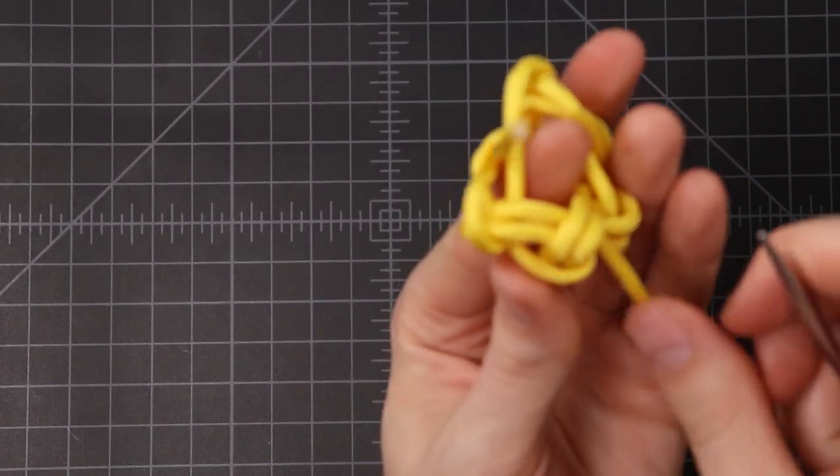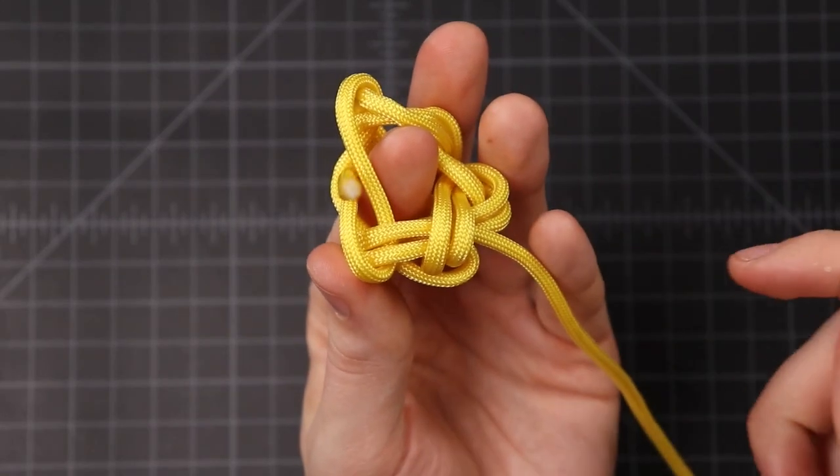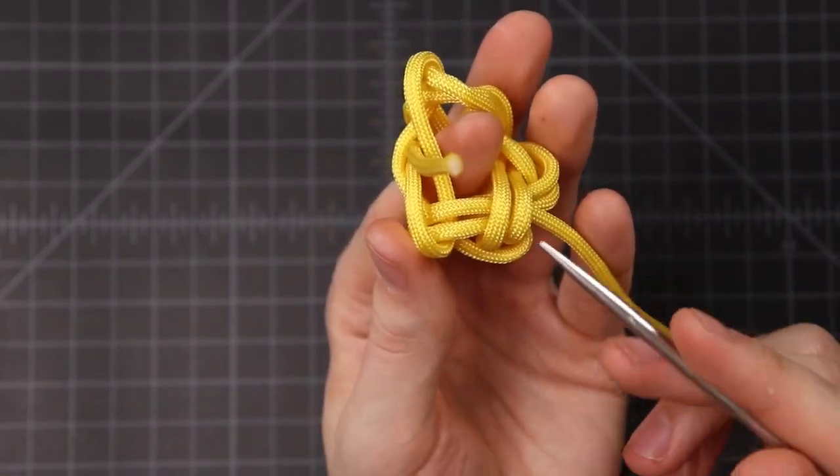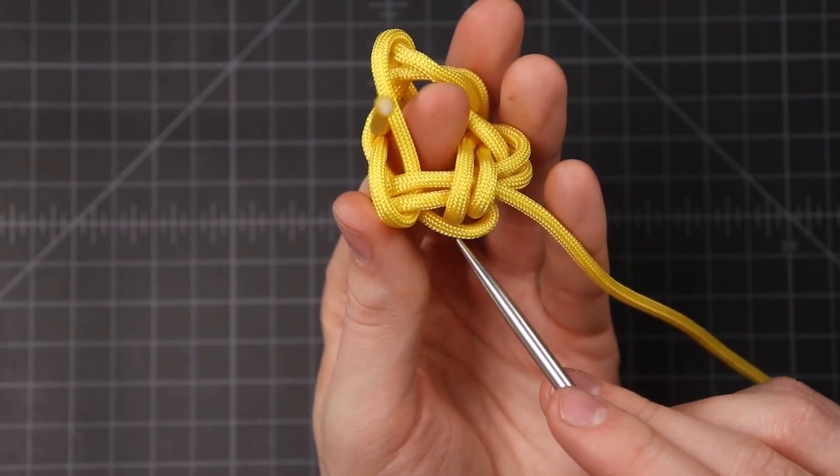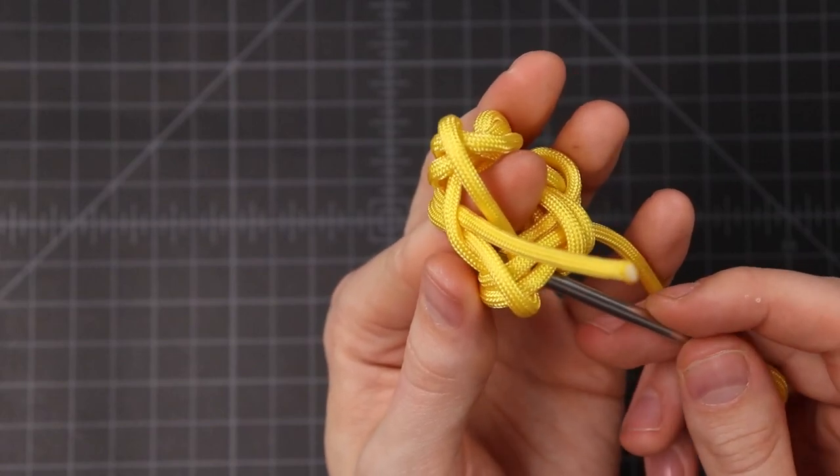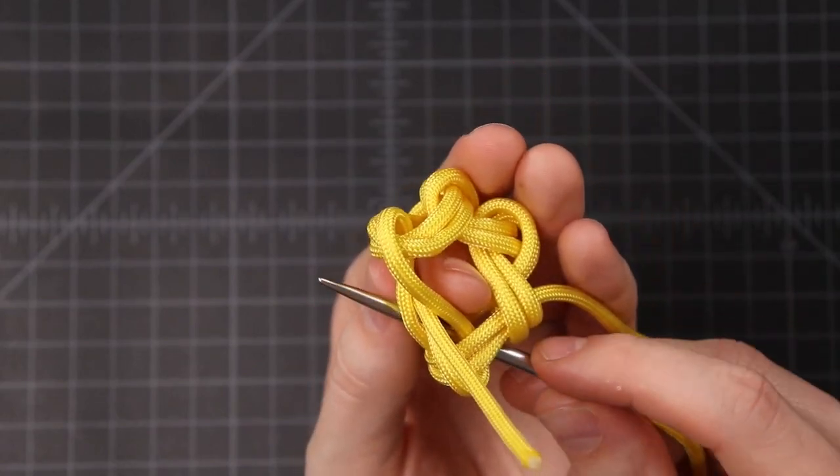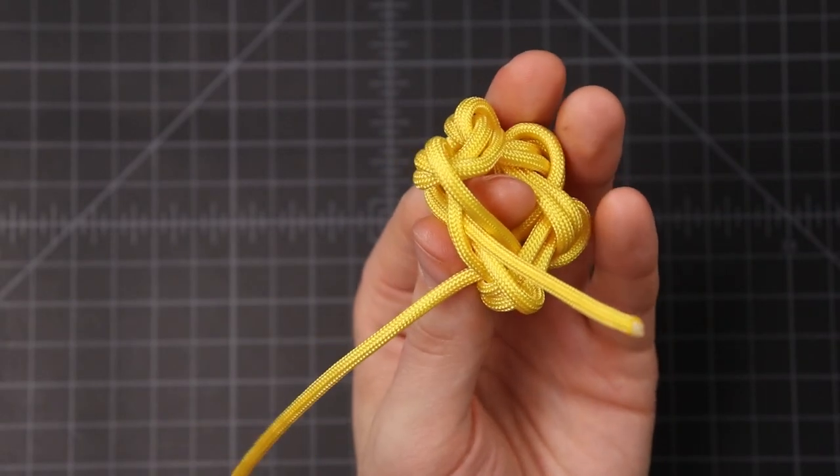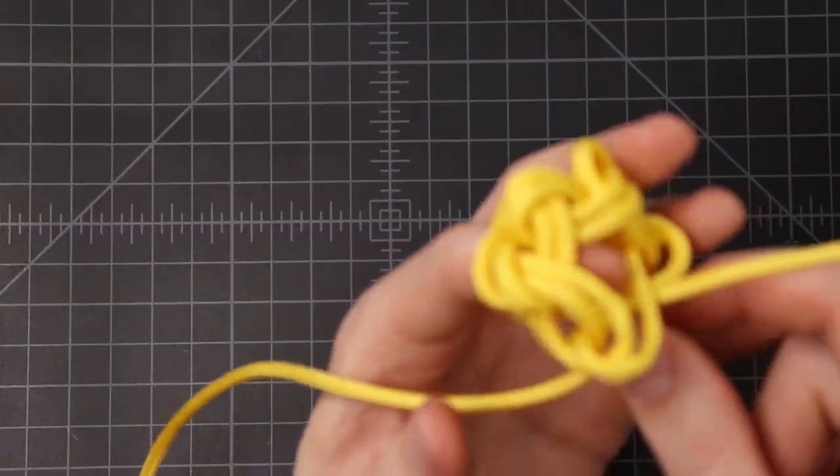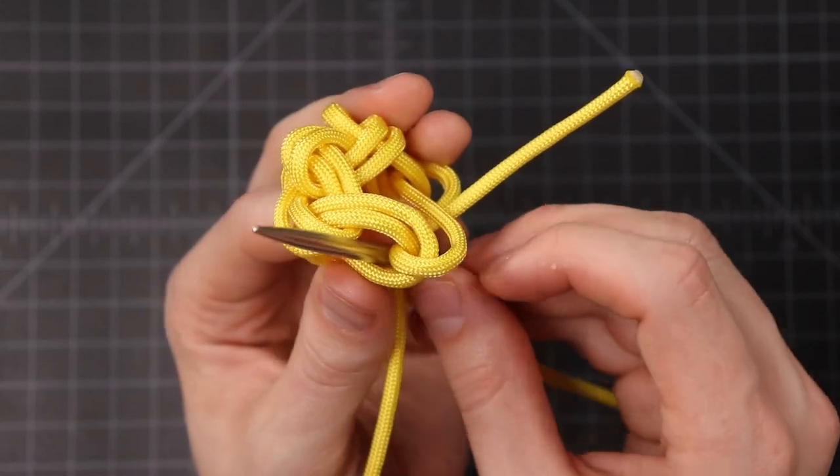Once you do this a couple times, you'll notice how we're really just repeating ourselves. But each time it can be tricky, and it's easy to get lost in this knot. So here's our loop this time. Following through the knot. Up through this loop now.